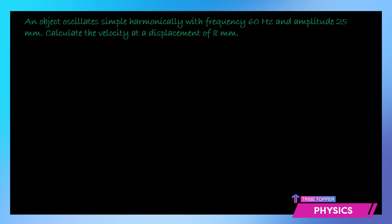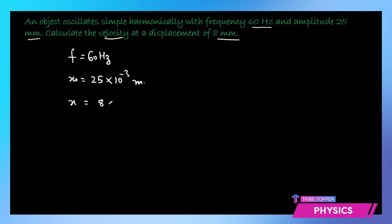Let us look at a question based on this formula. An object oscillates simple harmonically with a frequency of 60 Hz and amplitude 25 millimeters. Calculate the velocity at a displacement of 8 millimeters. We are given f = 60 Hz, x₀ = 25 mm = 25 × 10⁻³ m, and x = 8 mm = 8 × 10⁻³ m.